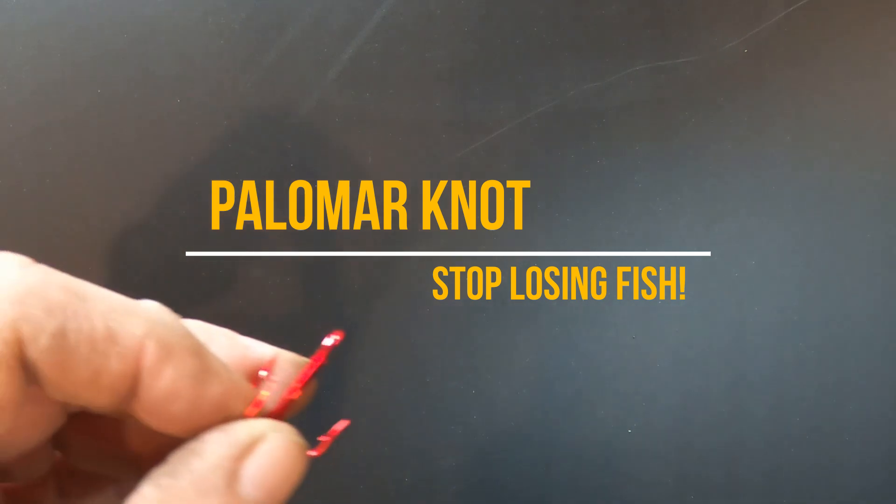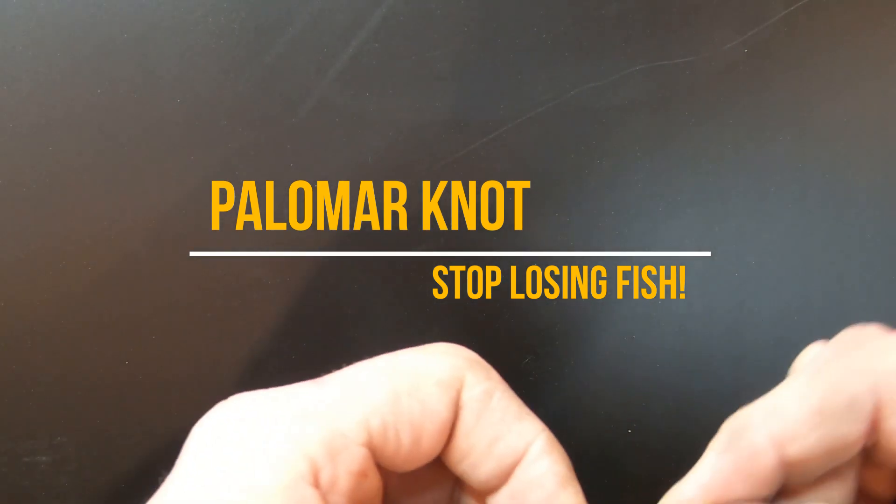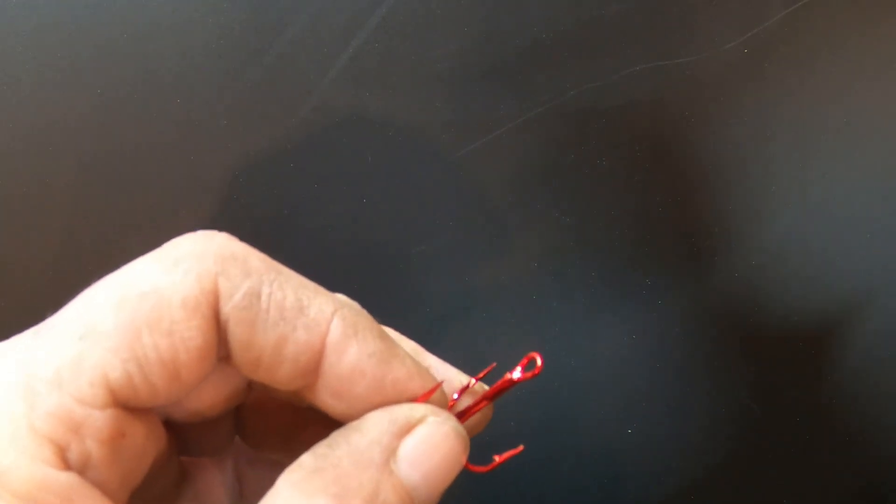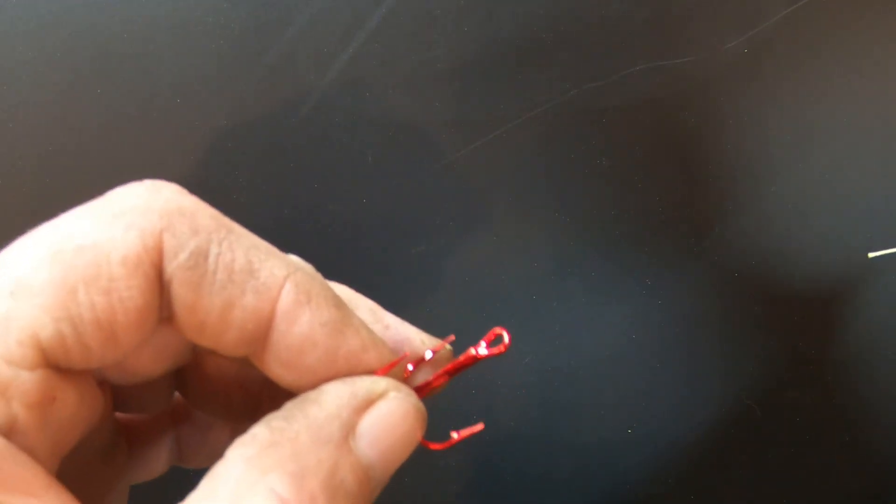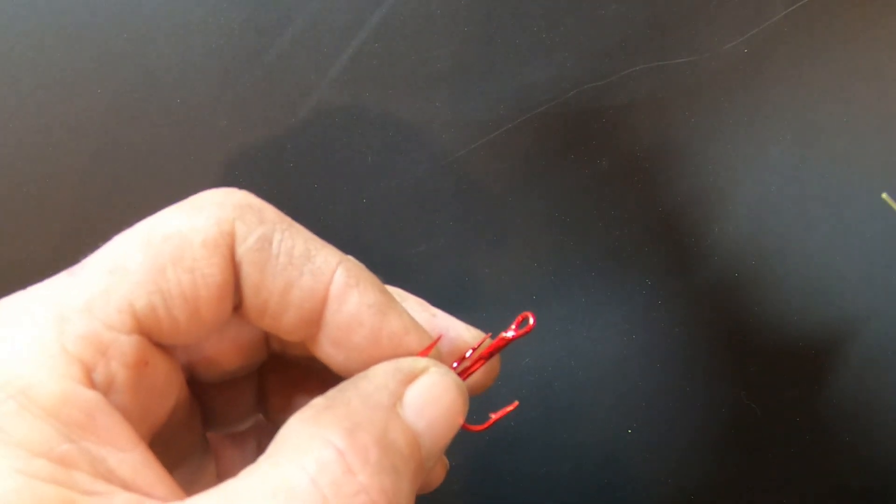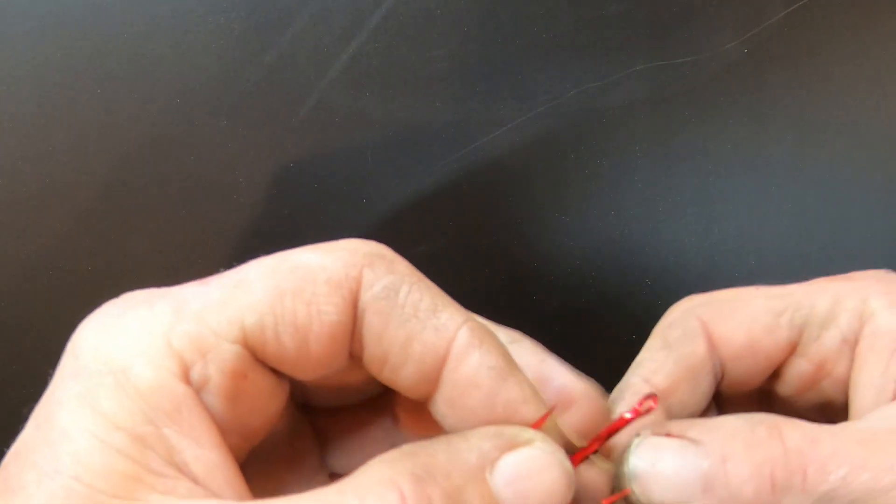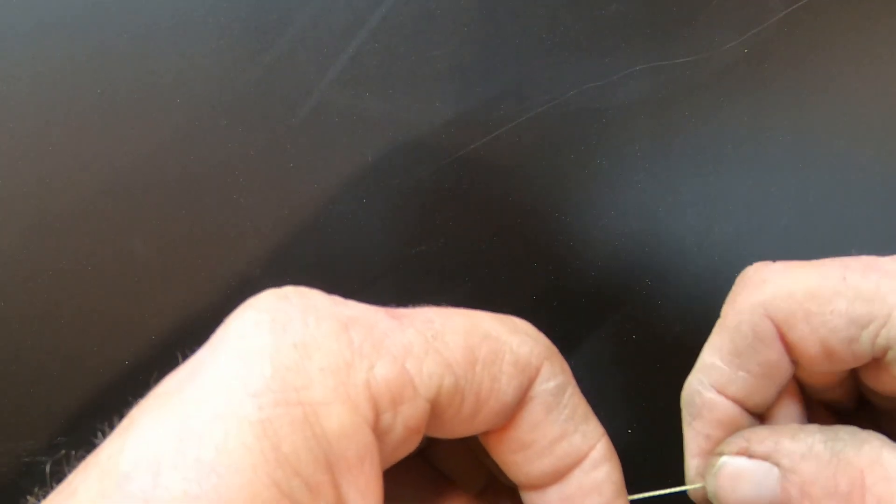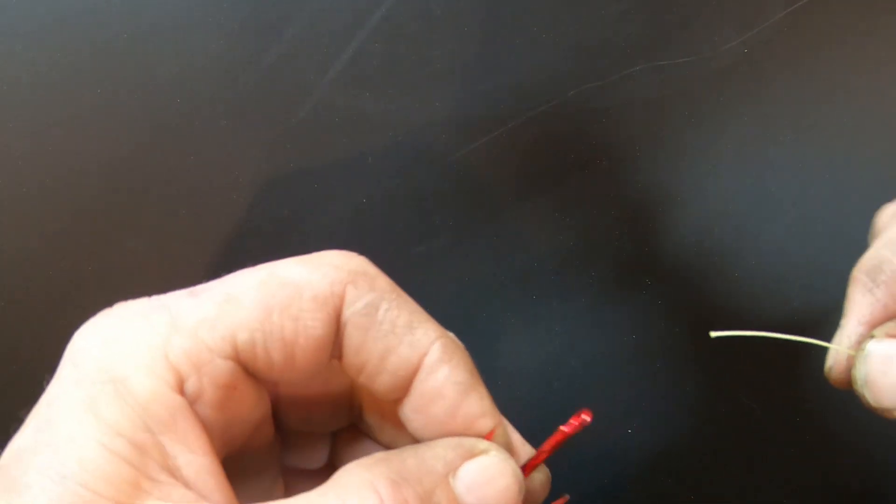So what you want to do - you can use braided or mono. I'm just using a treble hook and I'm using braided for the fact that it's yellow and it's better to see. They'll tell you to pinch the line and run it through. I don't believe in pinching the line that way - it doesn't weaken it. So run it through the eye.